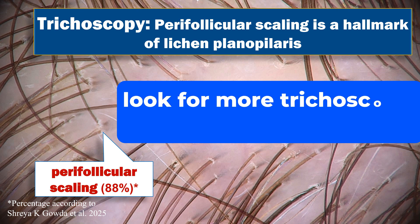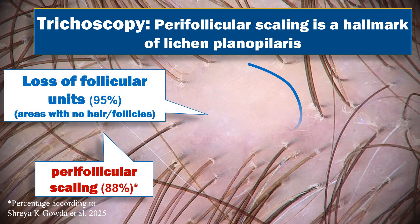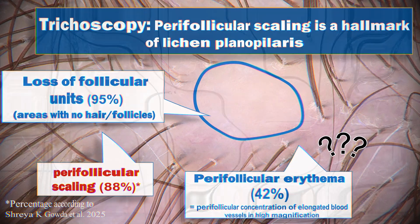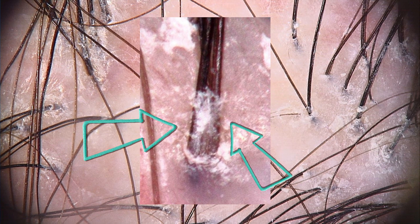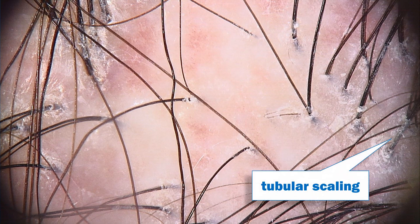We look for other features of lichen planopilaris in trichoscopy. They include the loss of follicular units, perifollicular erythema, and tubular scaling. Tubular scaling means there are scales which entangle the hair shaft as it grows, and at one moment it will detach — this is how hair casts develop.